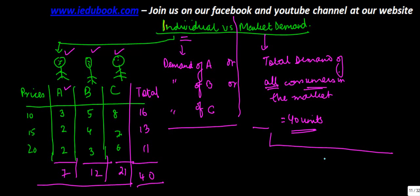Let us understand the concept of individual versus market demand. Now let us say the market comprises of three individuals who are A, B, and C. So you have these three individuals who combine together in a market.